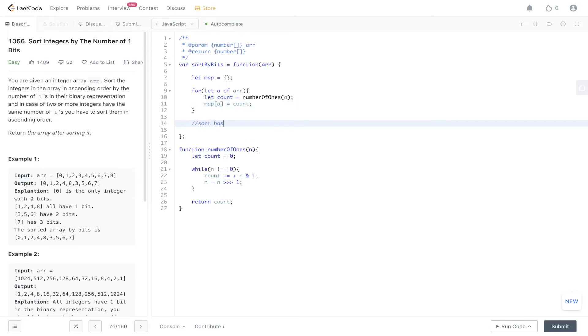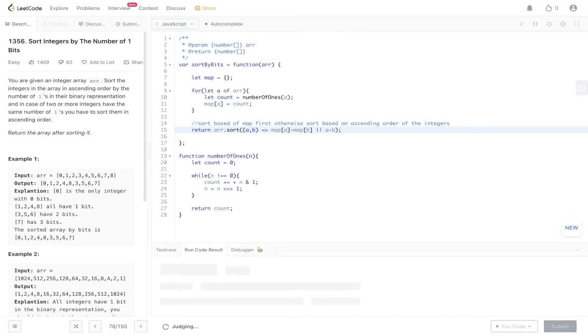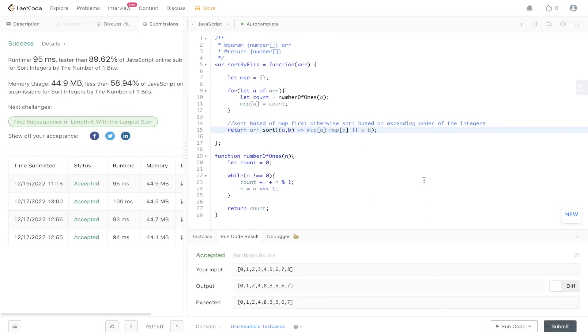Finally, we need to sort based on map first. Otherwise, if two values have the same bit, as in the case of three and six, we need to sort based on ascending order of the integers. In order to do that, we are going to use the sort method, going to pass in a and b because we're comparing two values. We're going to be using the map. So it would be map[a] minus map[b]. And if they're the same, we need to just use the integers. So it would be a minus b. Then we need to return this in order to get the result. Let's give this a run. Submit it. And there you go.